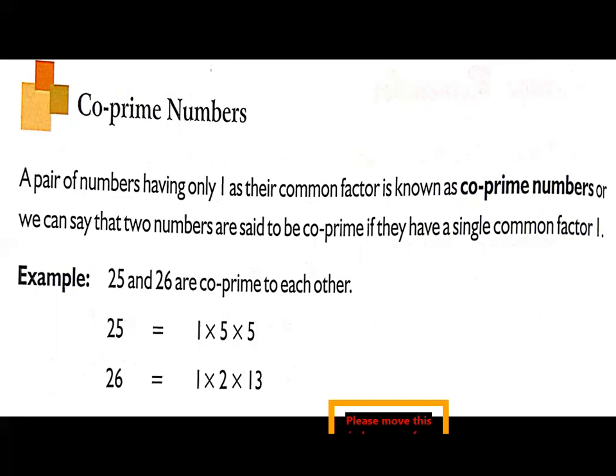Co-prime numbers means if you are choosing two numbers, if the two numbers are having a single common factor 1, then these two numbers are co-prime to each other.